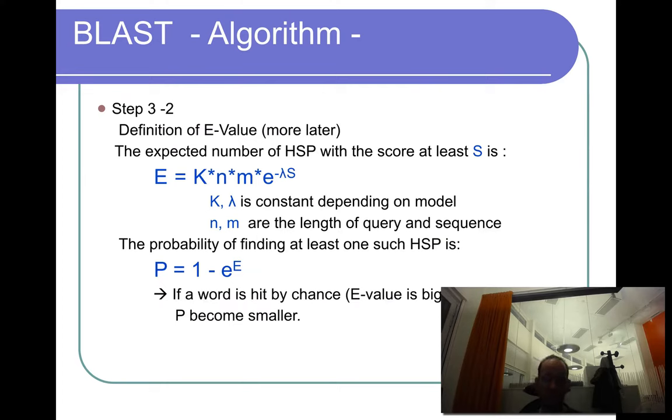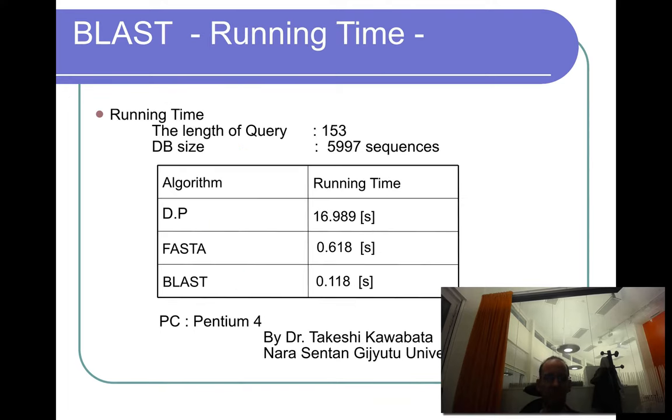And the E-value is calculated using this formula, which is depending on the kappa constant - the k and lambda - that are dependent on the matrix and also the composition biases. But then you have the length of the query and the length of the database, which means that if you have a big database, you will need to have a better score to get the same E-value. So the E-value increases if you have a big database for the same score. Sometimes you're talking about p-value, which is basically the same thing. And this we'll talk more about later.